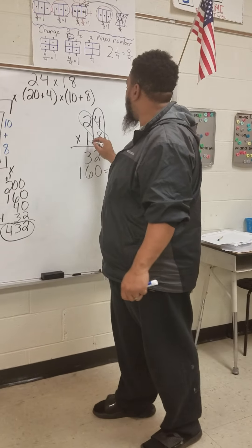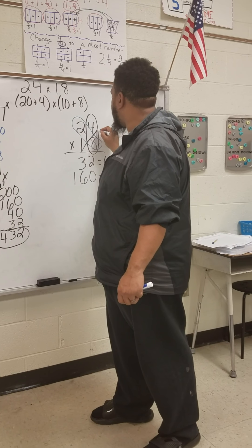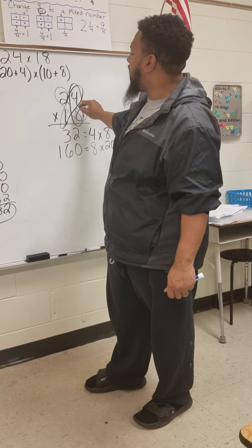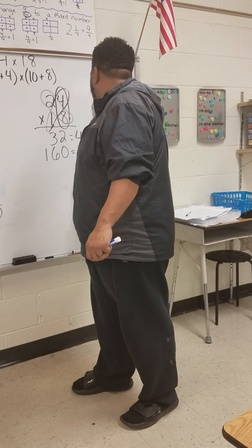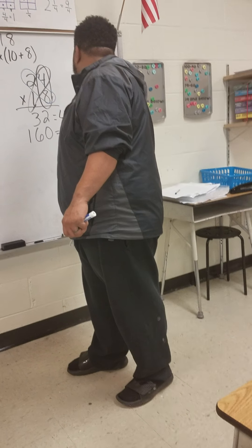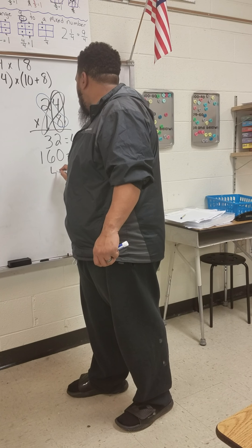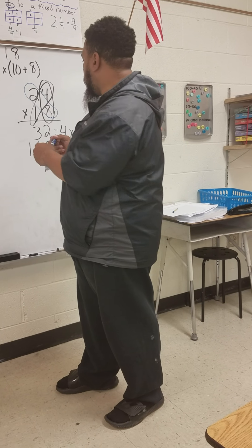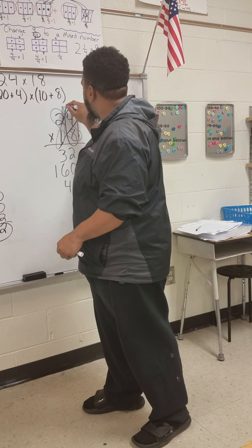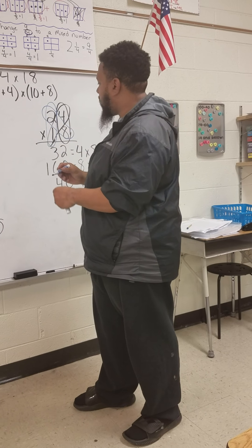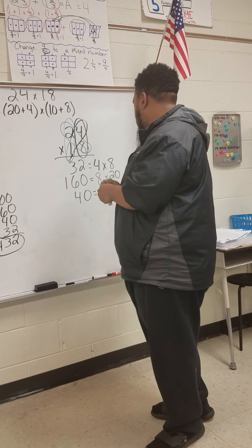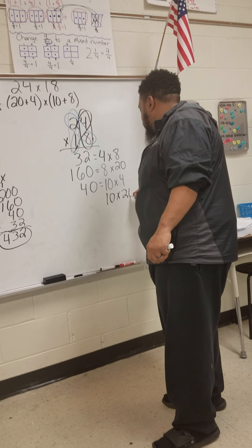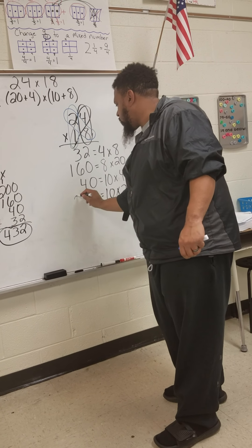Next, we move to the tens place in the bottom number. So we have the tens place times the ones place — it kind of looks like an X right now. So we have 10 times 4, which gives us 40. And then last but not least, we multiply the tens place times the tens place: 10 times 20 gives us 200.